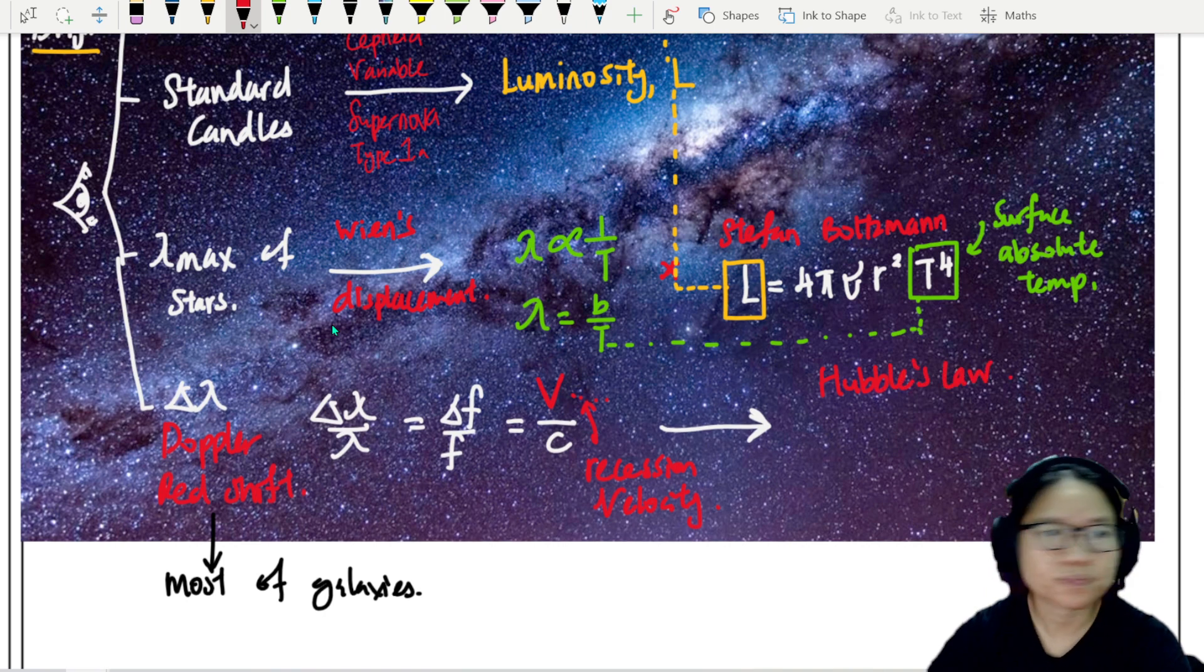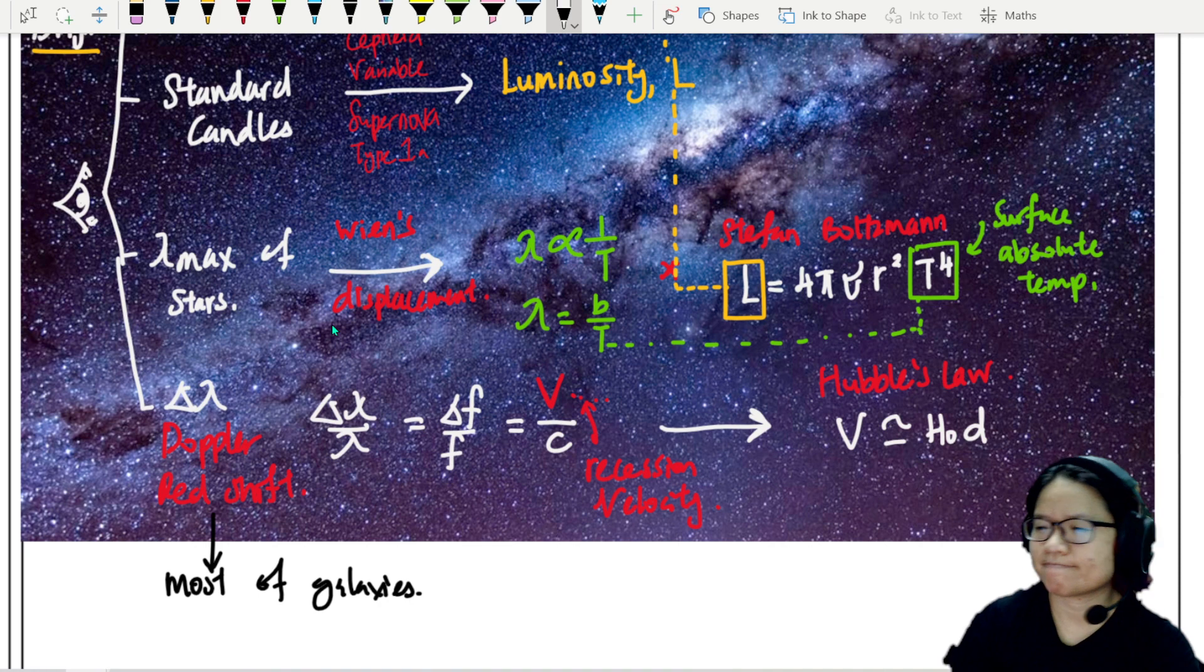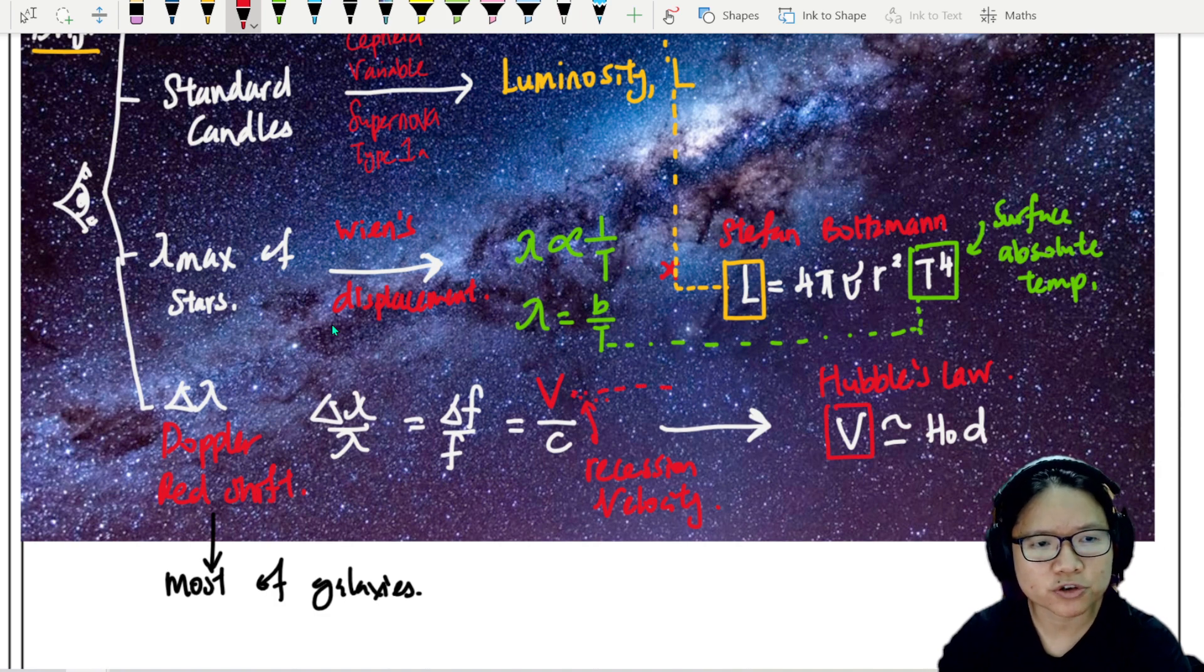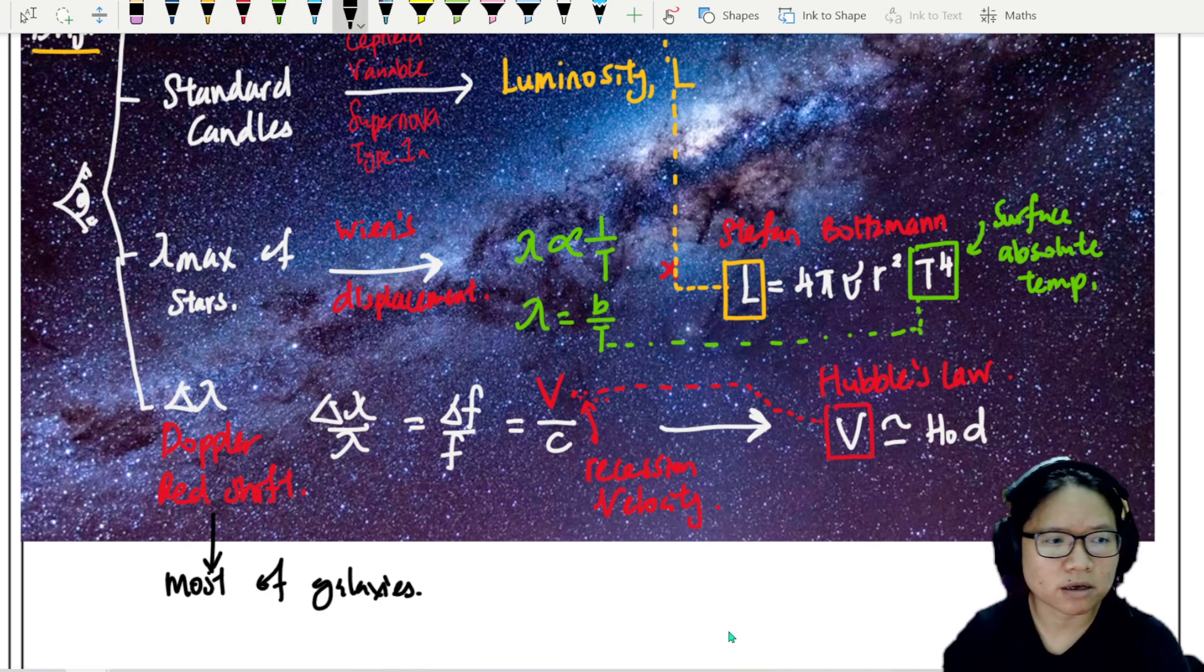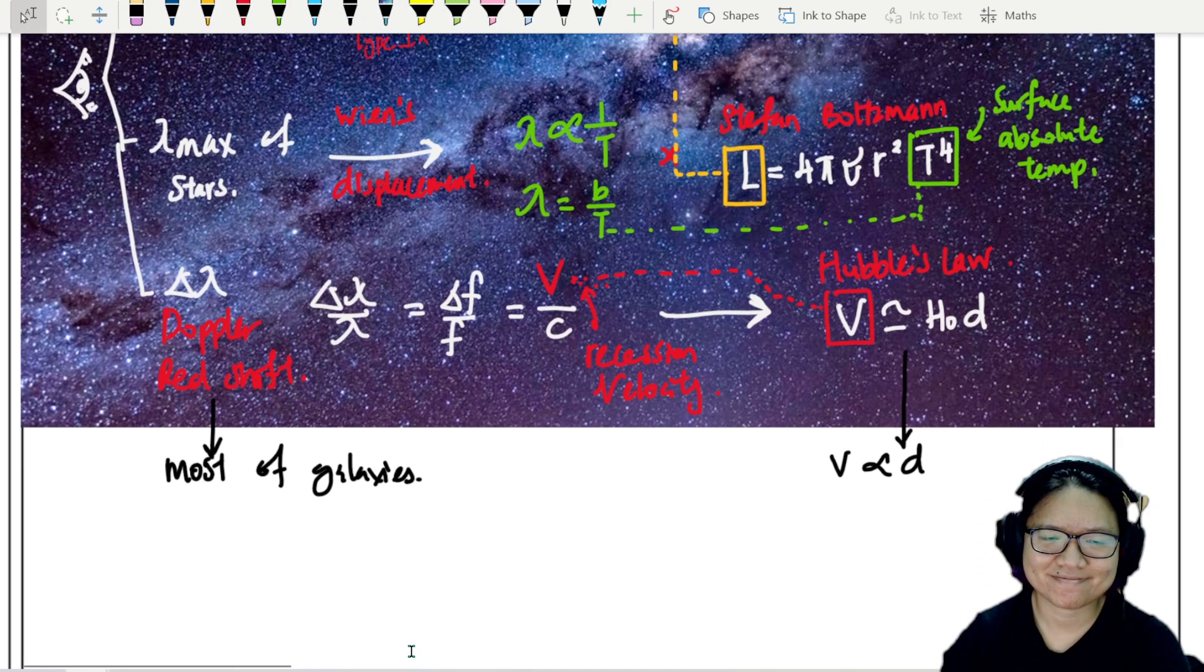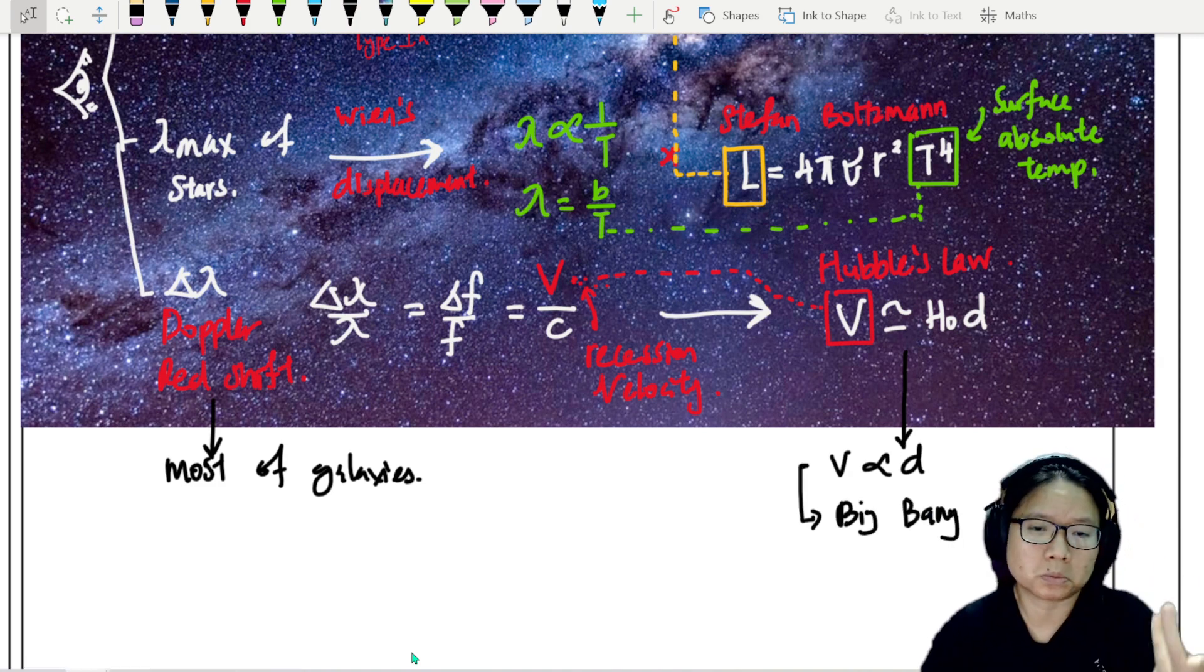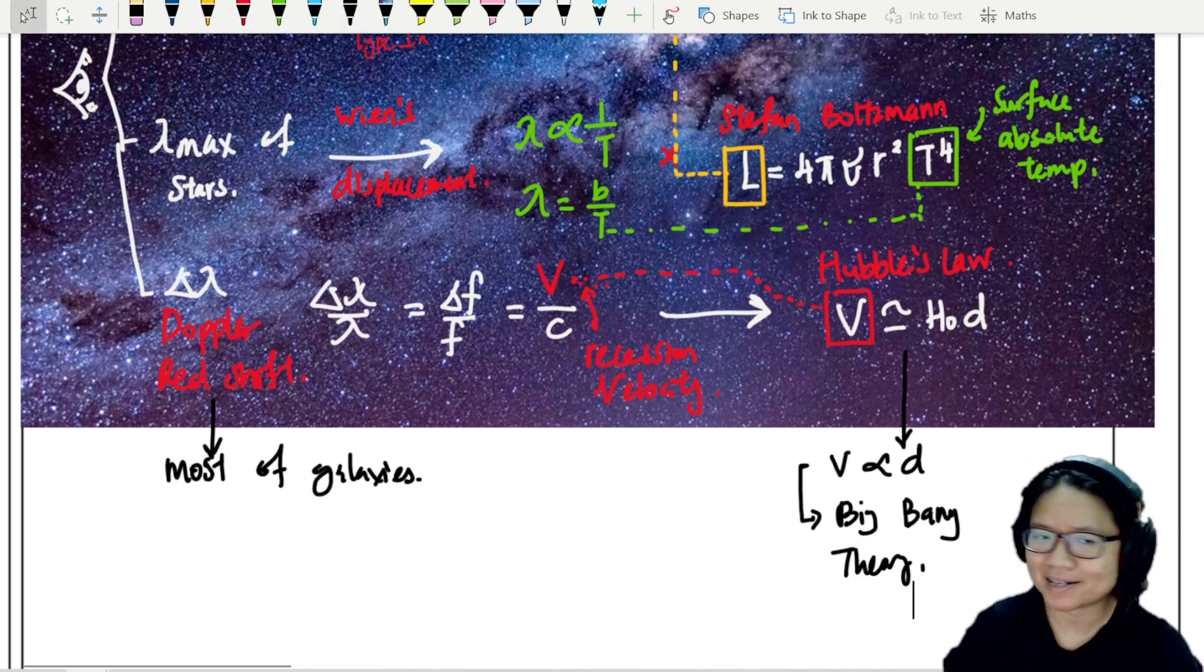Hubble's law, where the value of your V is approximately equal to your Hubble constant times D. And where did we get our V again? Well, our V is from your Doppler redshift, your recession velocity. So from here, we can actually calculate the distance of that galaxy or vice versa. But since V is proportional to D for most galaxies, this leads us to the Big Bang. Is there a big crunch? I don't know. But this is just a theory. We are just guessing. We are still collecting data.